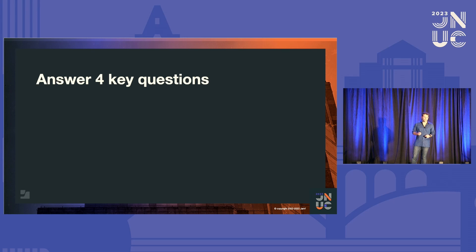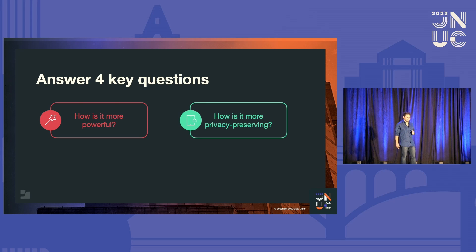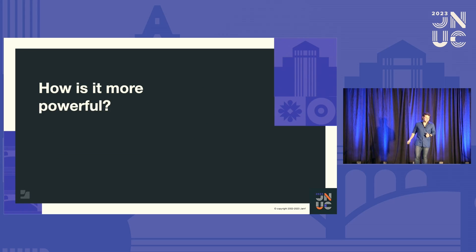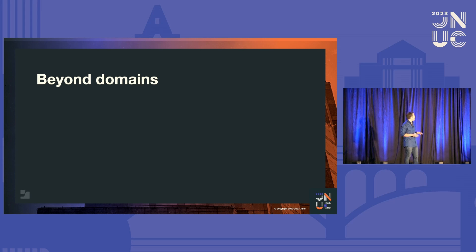Before going any further, there are four key questions I want to answer about Jamf's on-device content filter for iOS and iPadOS. How is it more powerful? How is it more privacy-friendly? Who is it for? And can I see it in action? Of course, the answer for that is yes, you can. Since on-device content filter is deeply integrated with Apple's architecture in an unrestricted way, we can go beyond usual domain-based rules, which is why it's so powerful.